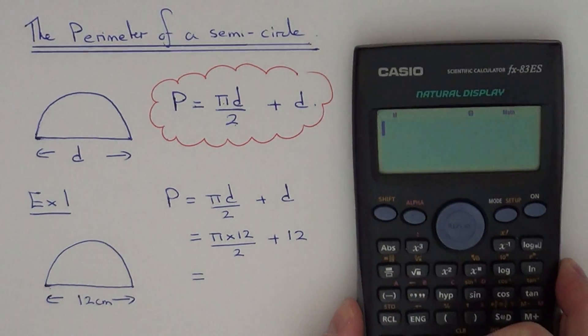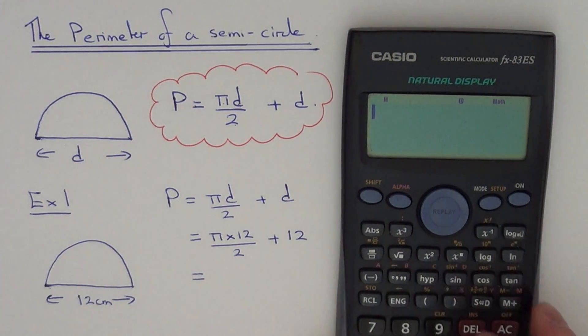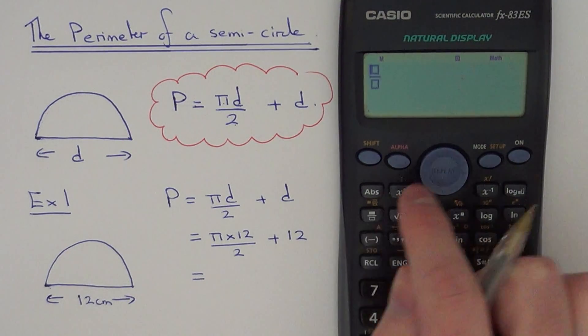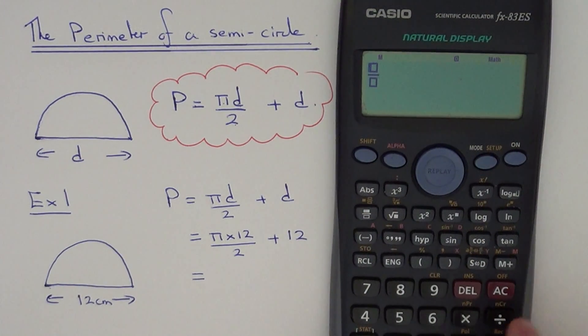So all you can do now is type this on your calculator. If you have one of the Casio calculators, you can use your fraction button and type it in exactly how it appears on the page, so it's pi times 12...